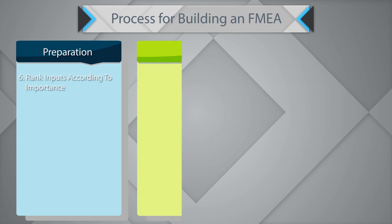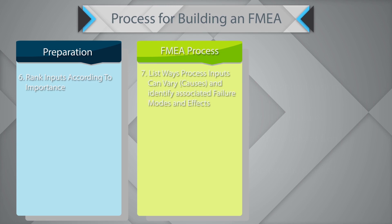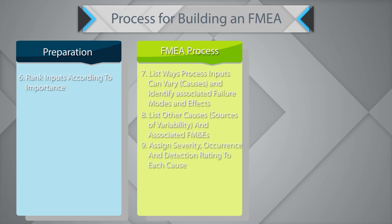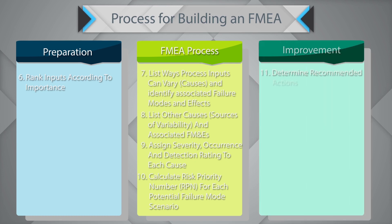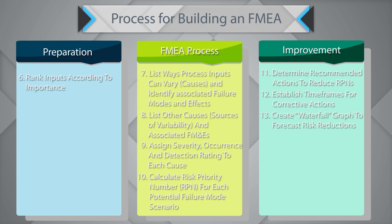Once all of that is done, start with the FMEA process. List ways in which the process inputs can vary and identify associated failure modes and effects. List other causes and sources of variability with associated failure modes and effects. Assign severity, occurrence, and detection ratings to each cause. Calculate the RPN for each potential failure mode scenario. Determine recommended actions to reduce the RPN, establish timeframes for corrective action, create a waterfall graph to forecast risk reduction, take the appropriate action, and recalculate all RPNs with the controls identified in place.